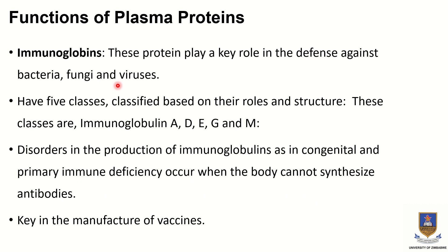Immunoglobulins are plasma proteins which play an important role in the defense against bacteria and fungi. They can be classified into immunoglobulin A, D, E, G, and M. When there are disorders in the production of these immunoglobulins, for example, children will have primary immune deficiencies when the body cannot synthesize antibodies, and one will be prone to bacterial, fungal, and viral infections. Research is also being done on their use in the manufacture of vaccines.